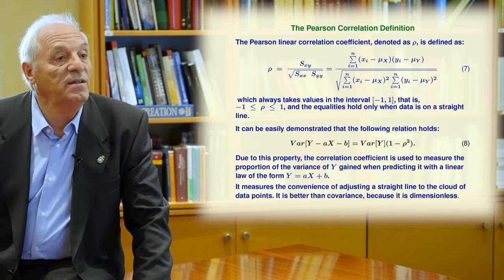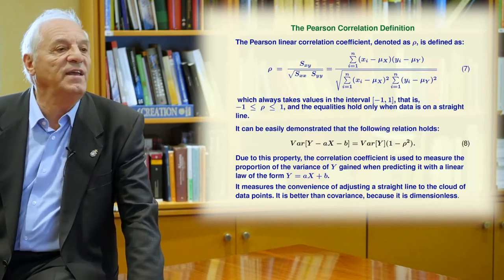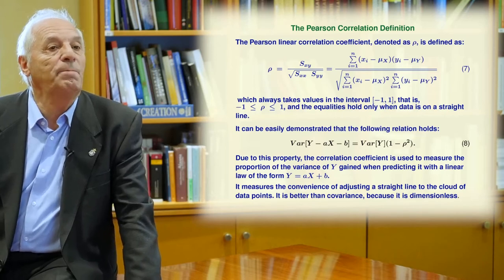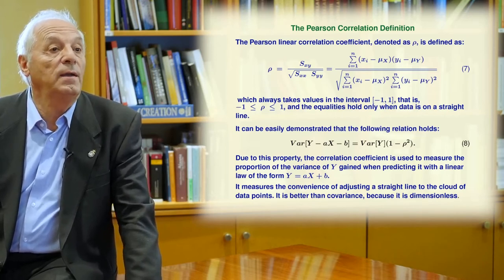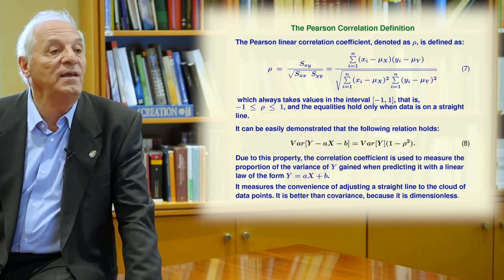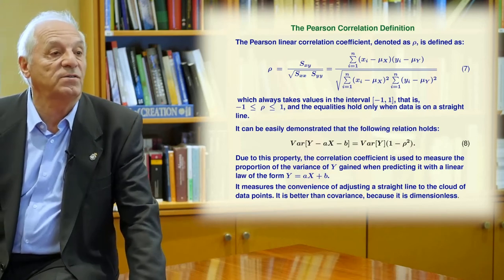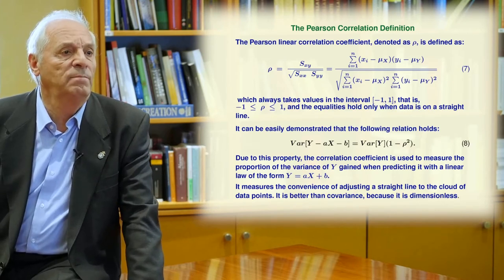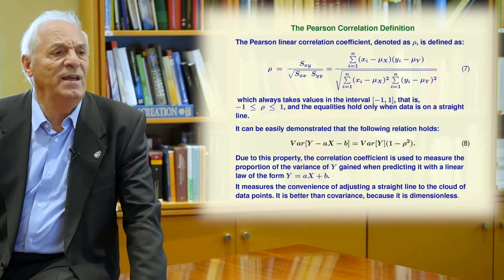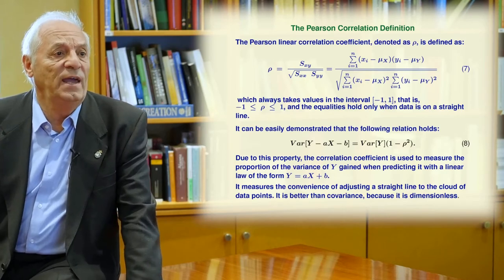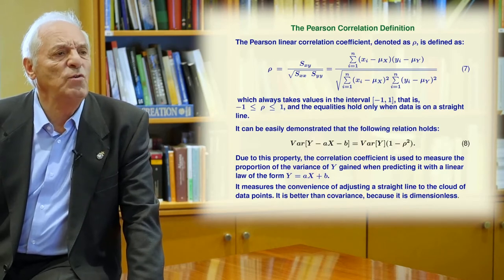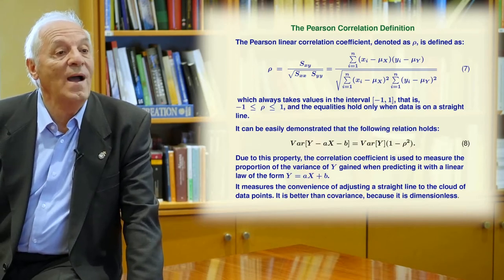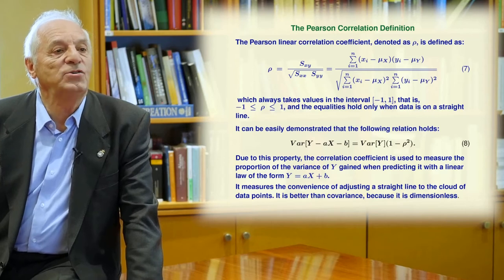It can be easily demonstrated that the following relation holds. The variance of y minus ax minus b—look that y-bar is the prediction of the random value y when we have no idea about the x regressor. And if you know the regressor and you apply a linear model, the variance of y minus ax minus b, that is the error you make, is the initial error, the initial variance of y, times one minus rho squared.